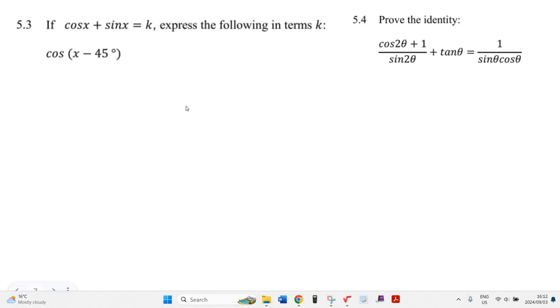Okay, let's try this trig question here. The first thing it says, if cos x plus sine x equals k, express the following in terms of k. Well, I don't know about this k thing, but I do know that this looks like the cosine of two angles subtracted.